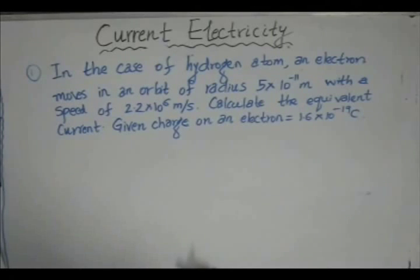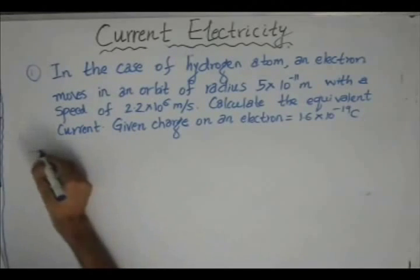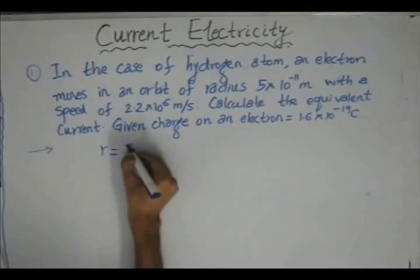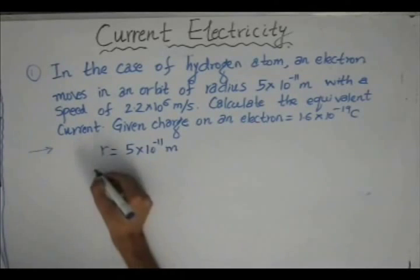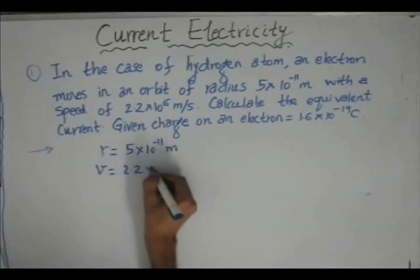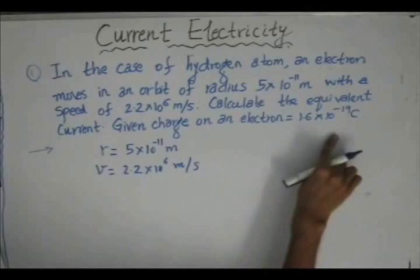This is the question: In the case of a hydrogen atom, an electron moves in an orbit of radius 5 into 10 to the power minus 11 meter with a speed of 2.2 into 10 to the power 6 meter per second. Calculate the equivalent current which is flowing, given that the charge of an electron is 1.6 into 10 to the power minus 19 coulomb. The data given is the radius of the hydrogen atom as 5 into 10 to the power minus 11 meter, the drift velocity as 2.2 into 10 to the power 6 meter per second, and the magnitude of charge on the electron as 1.6 into 10 to the power minus 19 coulomb.